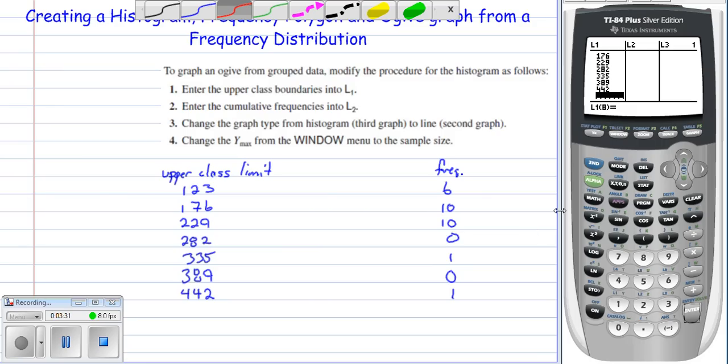All right, along with that we also need our frequencies. So the 123 has 6, the 176 has 10, the 229 has 10, 0, 1, 0, 1. Okay, so it all matches up. That's very important to have, a dimension mismatch is a possible error that you might get. And step number 3: change the graph from histogram to a line graph.